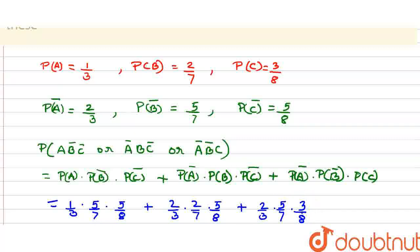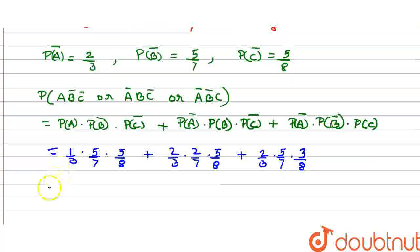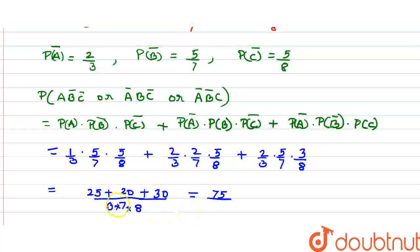We have all the possibilities now. Let us take the LCM. The LCM will be 3 times 7 times 8. In the numerator it will be 25 plus 20 plus 30. This is 75 divided by 168.